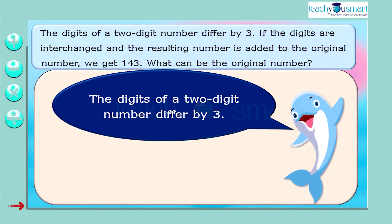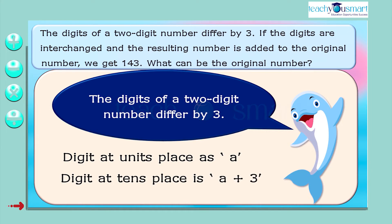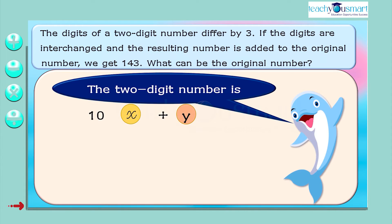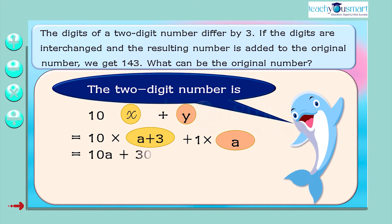Given that the digits of a two-digit number differ by 3, let's consider the digit at the unit's place as A. Then the digit at the tens place is A plus 3, because the difference is 3. Therefore, the two-digit number is 10 multiplied by (A plus 3) plus A, which equals 10A plus 30 plus A, equals 11A plus 30.